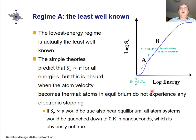Finally, I'll go to the lowest energy limit — regime A — which, somewhat surprisingly, is the least well known. The key reason is that it is very difficult to do measurements at these low stopping powers: when the ion energy is low it doesn't travel deep into materials, and it also has strong nuclear stopping, making it very difficult to measure the electronic stopping and distinguish it from the nuclear stopping power.